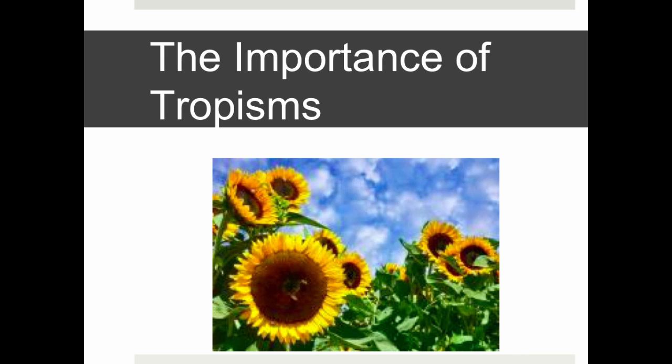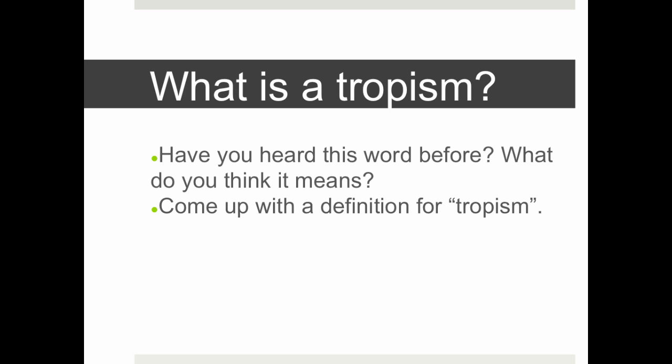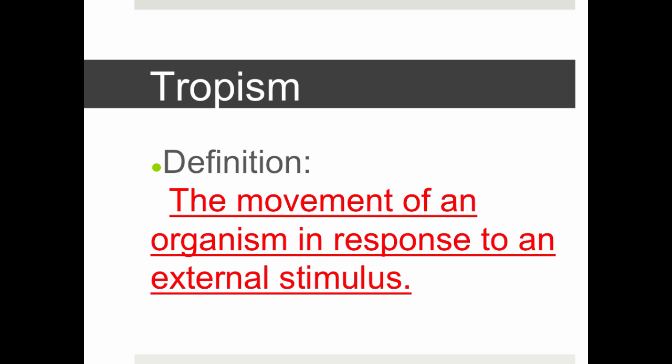Alright, so after today's Station Labs, we are going to talk about the importance of tropism. So what is tropism? Have you ever heard this word before? What do you think it means? Right now in your Cornell notes, I want you to pause the video and come up with your own definition of tropism. The true definition of tropism is the movement of an organism in response to an external stimulus.